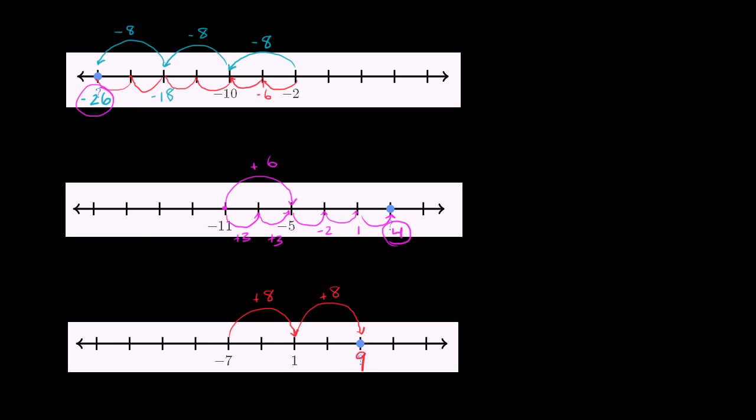Another way we could have thought about it, if we added 8 over two jumps, that means we added 4 on each jump. So this one must be negative 3. Add 4, you get to 1. Add 4, you get to 5. Add 4, you get to 9.